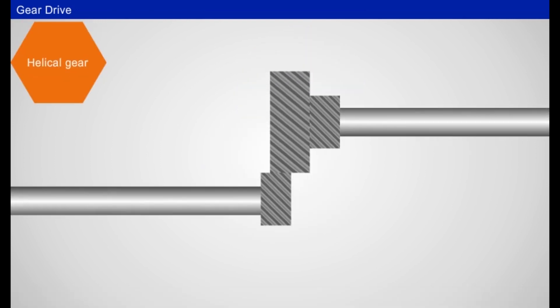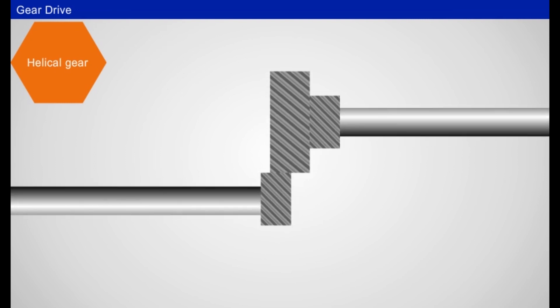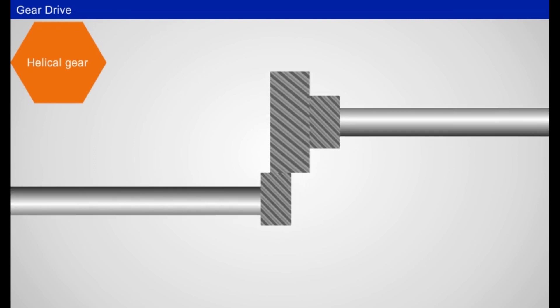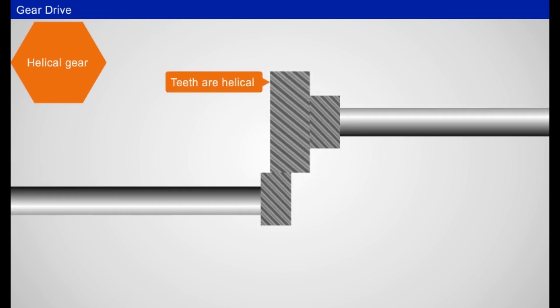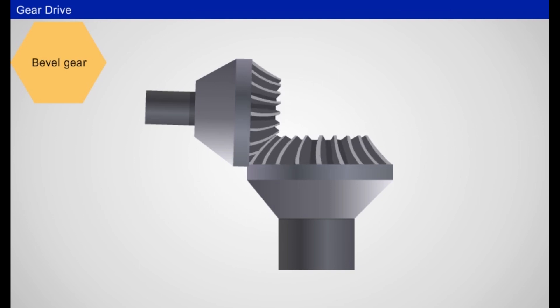Helical gear: Like spur gears, the axis of connecting shafts are parallel as well as non-parallel and non-intersecting, but the teeth are helical. Bevel gear: It is used for non-parallel and intersecting shafts.